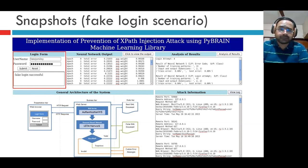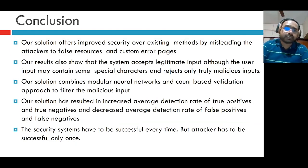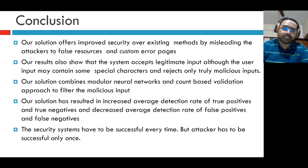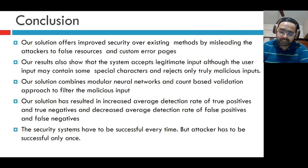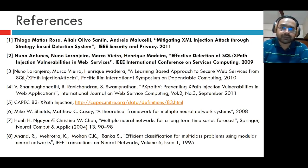The hacker tries to log in with the fake data — it shows 'login successful' again, making the hacker believe he has gained access to the real system, but in reality he has not. The conclusion is that our solution offers improved security over existing methods by misleading attackers to false resources and custom error pages. Our results show that the system accepts legitimate input even if it contains some special characters and rejects only truly malicious inputs. Our solution combines modular neural networks and count-based validation to filter malicious input, resulting in increased true positive and true negative detection rates and decreased false positive and false negative rates. With deception, we can buy extra time to protect our resources — we may not completely protect the system, but this extra time helps. Thank you.